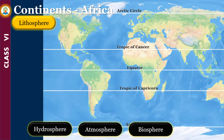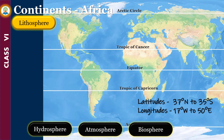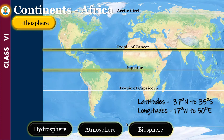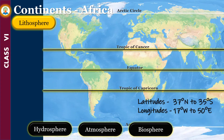Africa is the second largest continent of the world. It lies between 37 degrees north and 35 degrees south latitudes, and 17 degrees west and 50 degrees east longitudes approximately. Three important parallels of latitude — the Tropic of Cancer, the Equator, and the Tropic of Capricorn — pass through Africa. The Prime Meridian also passes through this continent.